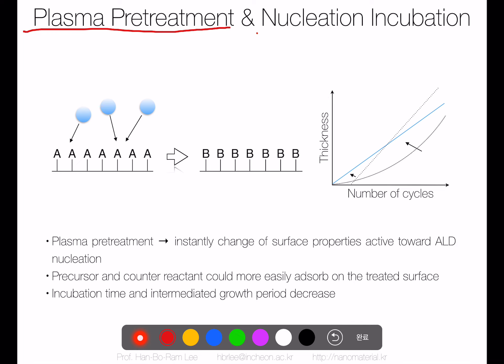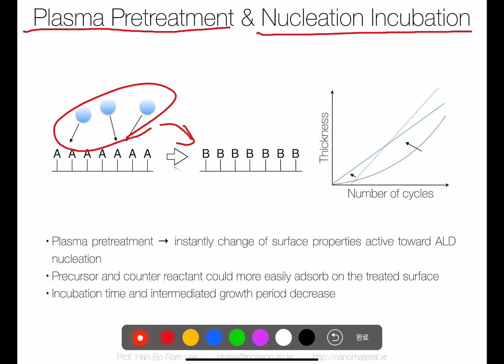One advantage of plasma ALD (PEALD) is that we can do plasma pretreatment, which affects nucleation delay, nucleation inhibition, and nucleation incubation. One reason for nucleation incubation is that the surface needs time to transition from its original state to one active for ALD nucleation. Using highly reactive plasma radicals as counter reactants, we can quickly change the surface to a very active state — potentially converting the nucleation curve to a very linear growth mode.